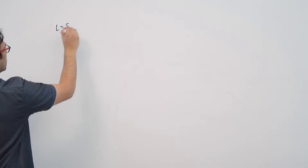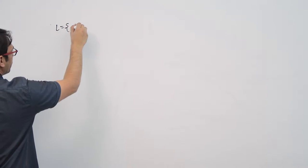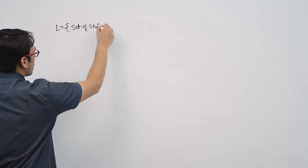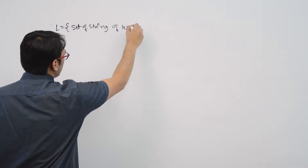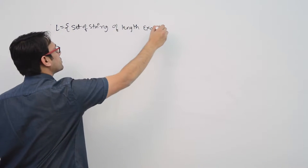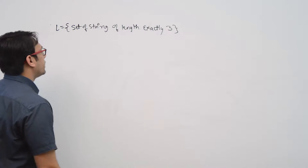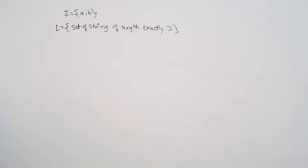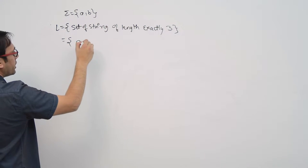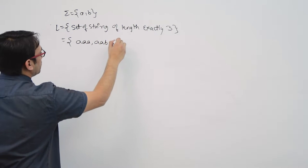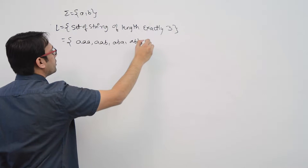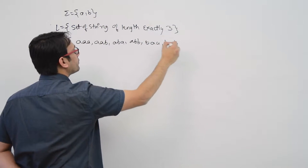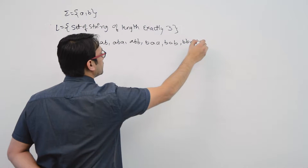Let us take a few more examples of languages. Assume the language is the set of strings of length exactly 3, and the alphabet sigma equals {a, b}. The strings of length exactly 3 are: aaa, aab, aba, abb, baa, bba, and bbb.